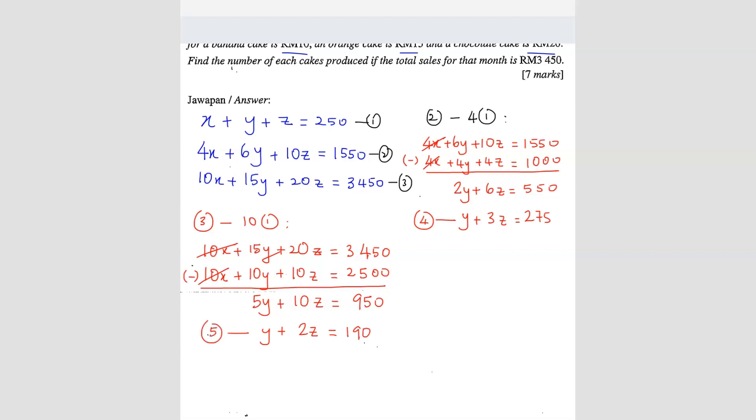Now I've got equation 4 and equation 5. We can eliminate y by using equations 4 and 5. I'm going to take equation 4 minus equation 5: y plus 3z equals 275 minus y plus 2z equals 190. So you can eliminate y here and get z equals 85.